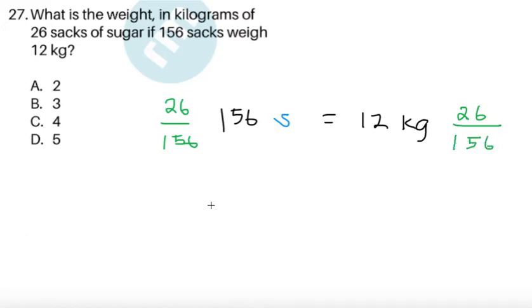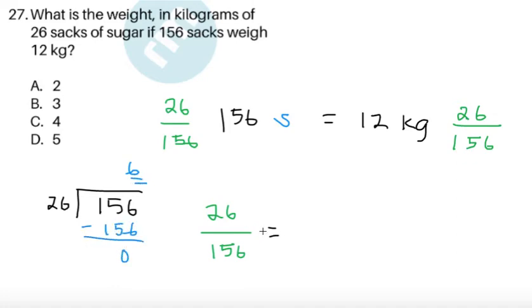Now what is 26 over 156? We can actually get the lowest term. So 26 over 156. 156, surprisingly, is actually divisible by 26. So we can just simply use division. In fact, you can ask yourself how many times does 26 go into 156 exactly 6 times. So 6 times 26 is indeed 156. So division gives us 6.